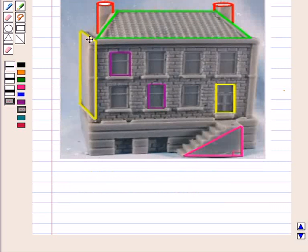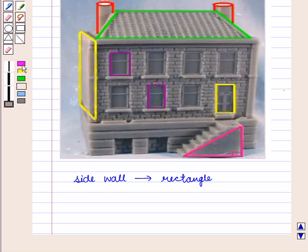We can also see that the side wall here is in the shape of a rectangle. That is a two-dimensional figure.